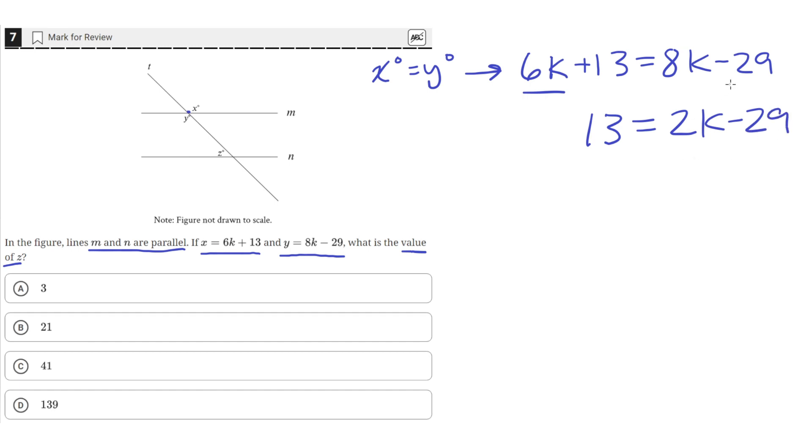Then we can move this negative 29 to the other side by adding 29 to both sides. So 29 plus 13 is equal to 42, which will be equal to 2K.